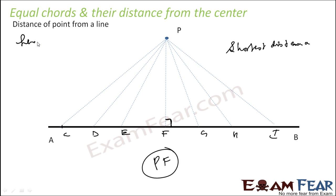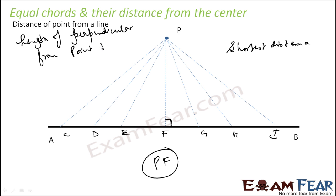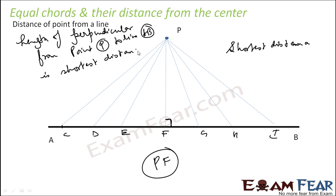So the length of perpendicular from point P to line AB is the shortest distance. When you talk about the distance of a point from a line, you talk about the shortest distance, and that is the length of perpendicular from point P to this line.